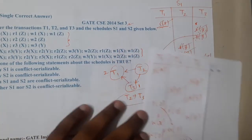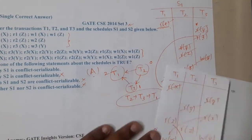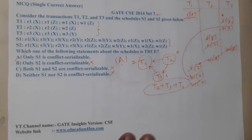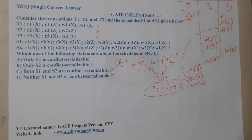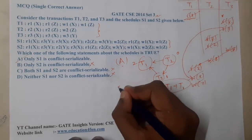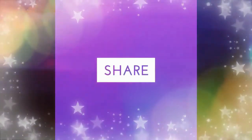We have found a loop in the precedence graph for S2, meaning S2 is not conflict serializable. Therefore option A is the correct answer. This is around the 10th or 11th question we are solving on conflict serializability. I hope everyone got a clear idea. In the next lecture we will continue with the next question. Thank you, and thanks for watching — like, share, and subscribe for more videos.